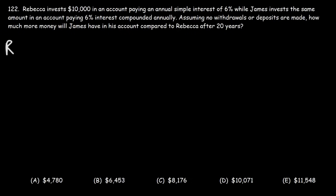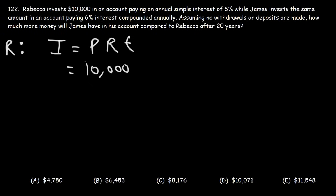Let's begin by calculating how much Rebecca will have after 20 years. The amount of simple interest she's going to earn is the principal times the interest rate times the time in years. The principal is $10,000, the interest rate is 6%, which is 0.06 as a decimal, and the time in years is 20 years.